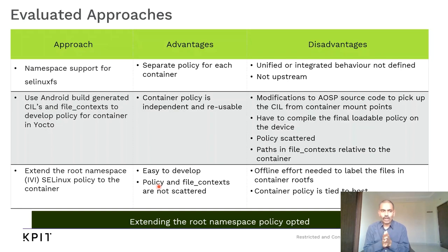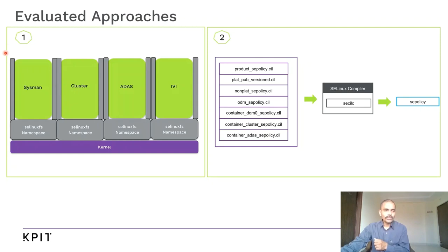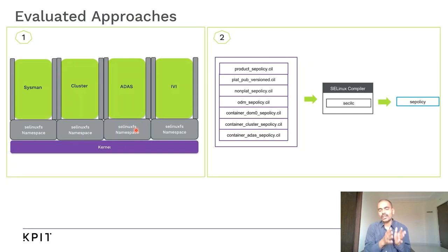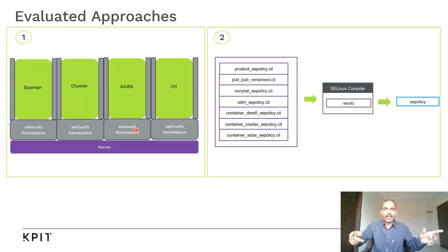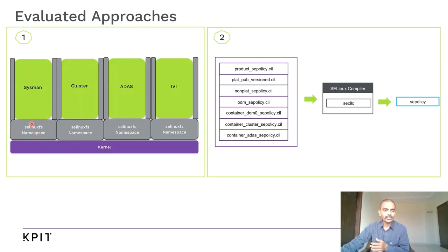Now let's look at the approaches we evaluated. The first approach is namespace support for SELinux fs. We have out-of-tree patches that allow SELinuxfs to be in a separate namespace. This allows mounting SELinuxfs independently in each container, so we can have a separate policy for each container including the root namespace. Sysman would have a separate policy loaded from its SELinux fs, and cluster would have a separate SELinux policy loaded into its SELinux namespace.